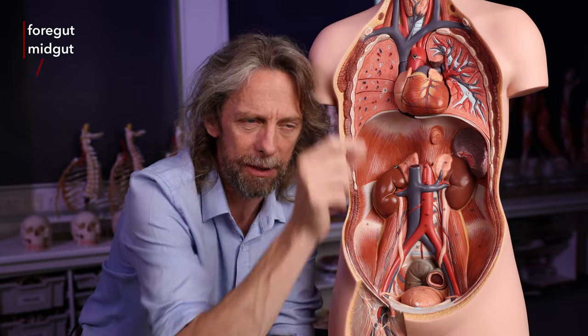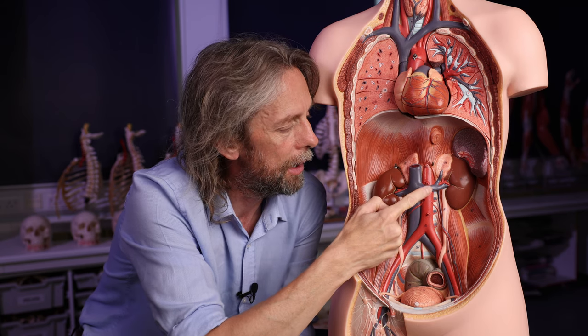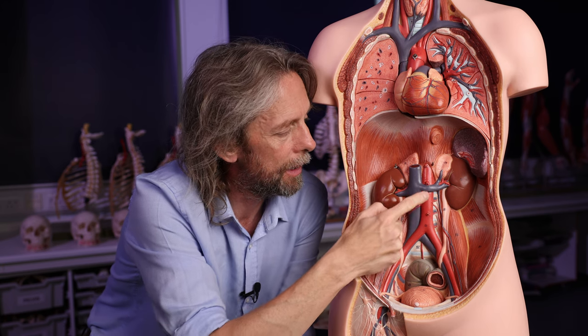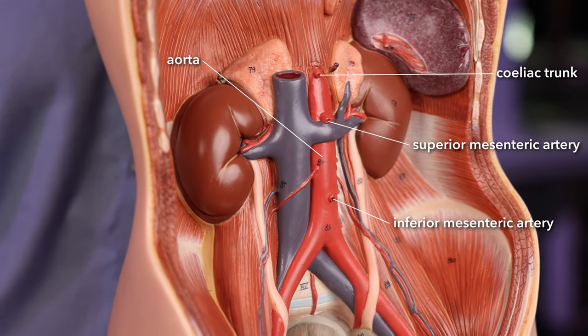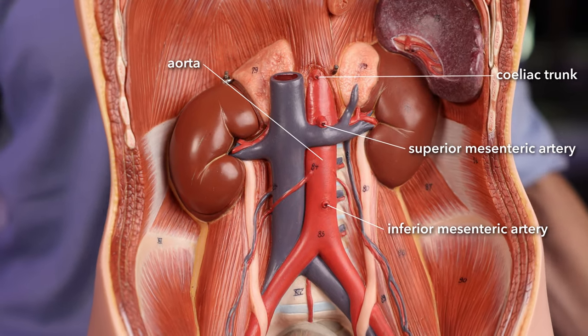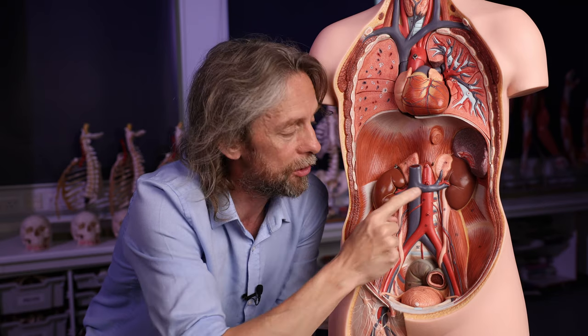Embryologically we talk about the bowel as foregut, midgut, and hindgut, because it starts off as a simple tube which gets longer and longer. Each region of that early simple tube is supplied with blood by either the celiac trunk, the superior mesenteric artery, or the inferior mesenteric artery. Today, looking at the blood supply to the large bowel, we're thinking about midgut and hindgut — and therefore the superior mesenteric artery and the inferior mesenteric artery.